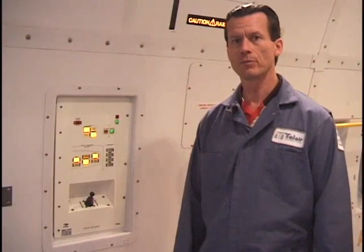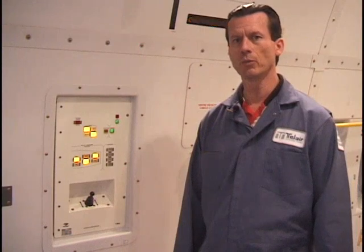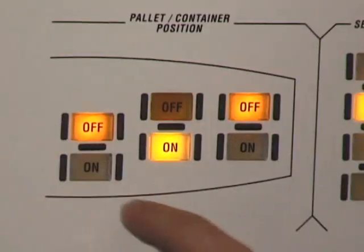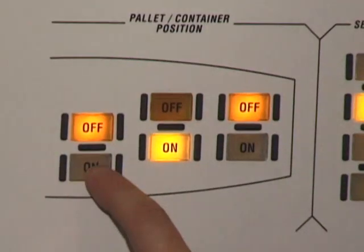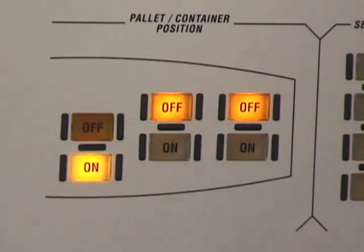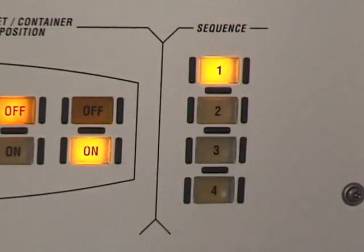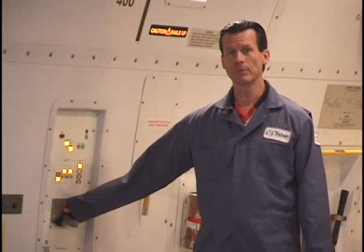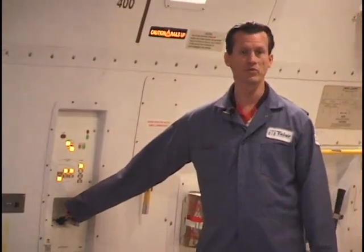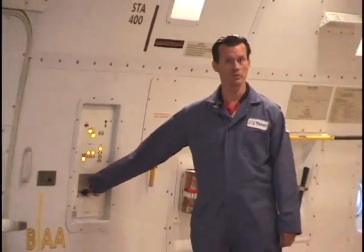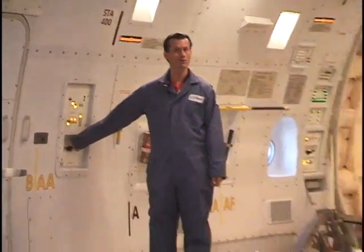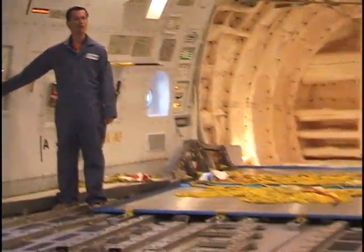To load pallet position 2B, first select the on button for the third pallet position. Activate sequence 1. The joystick can now be actuated in the steer drive direction in conjunction with the steer drive switch located on control panel 5R.